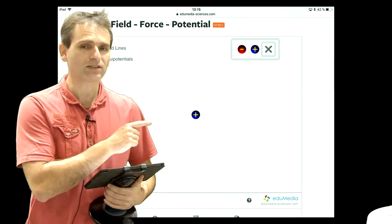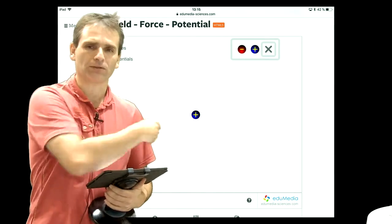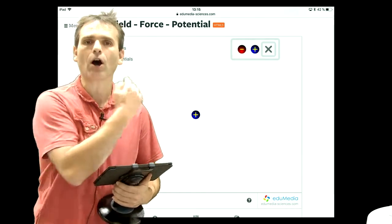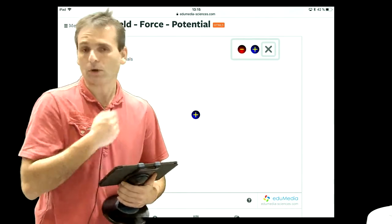And this charge, you cannot see this, but there is a perturbation, which we call electric perturbation, all around this charge.